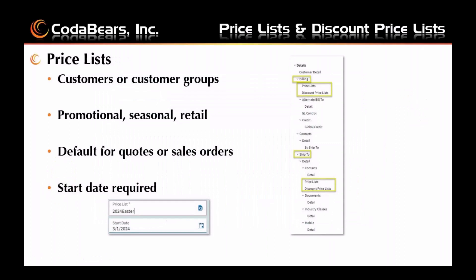Setting up a price list: you can link them to customers or customer groups. In the customer details, you can put them under billing customer price list or discount price list, or the ship to customer price list and discount price list. You can design different types of price lists — a main standard retail price list, a promotional one, and a seasonal one. If you attach a price list to a customer or customer group, when you create a new quote or sales order, the pricing will default in for each part on that price list. Otherwise, if there's no price list at that level but there is a price group for the product group that part is in, the price will default in. Otherwise, the price from the part sales unit measure defaults in.